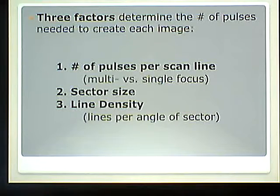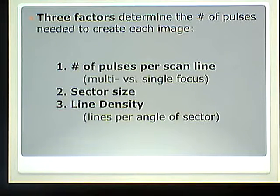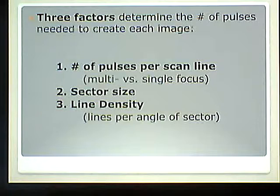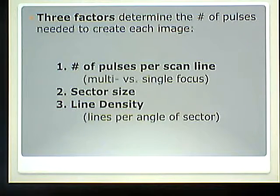All of these things we're doing add pulses to the image, therefore increasing the time it takes to make each image, therefore decreasing the frame rate or the number of cycles made per second, therefore decreasing temporal resolution. It always goes back to how long it takes to make one frame — and then the domino effect happens.